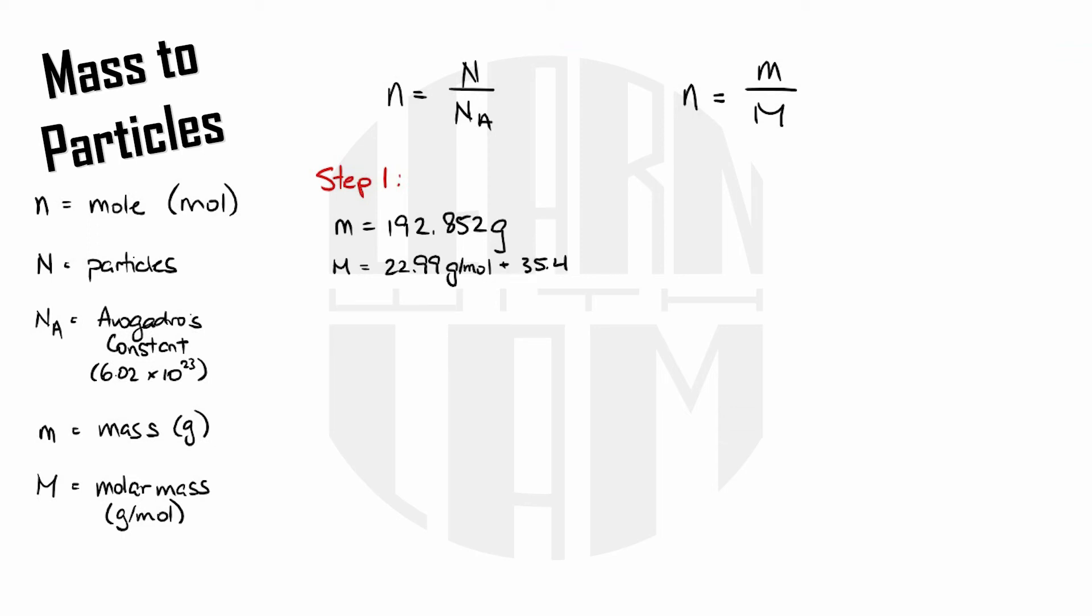So mass is 192.852 grams, molar mass is 22.99 grams per mole from sodium plus 35.45 grams per mole from chlorine which gives me a total of 58.44 grams per mole. My equation is moles equals mass over molar mass which is 192.852 grams divided by 58.44 grams per mole and that gives me 3.3 moles of sodium chloride.